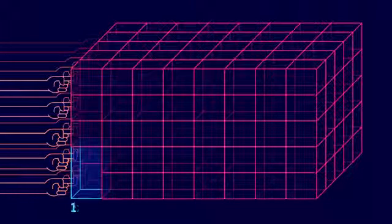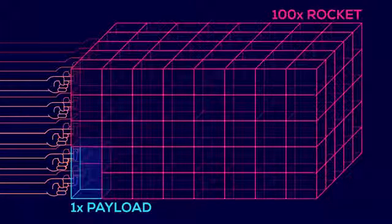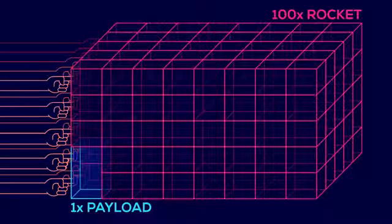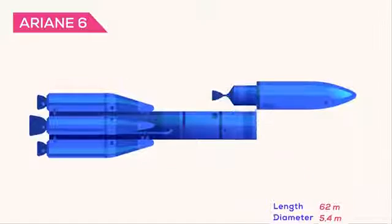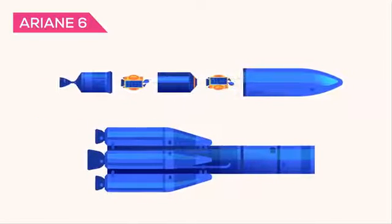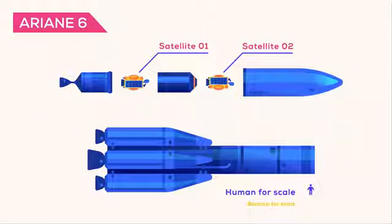At the end of this madness, you need closer to 100 times the weight of your payload to launch. Ariane 6, for example, the European rocket, will weigh 800 tons and should be able to transport 10 tons into geostationary transfer orbit or 20 tons into medium earth orbit.